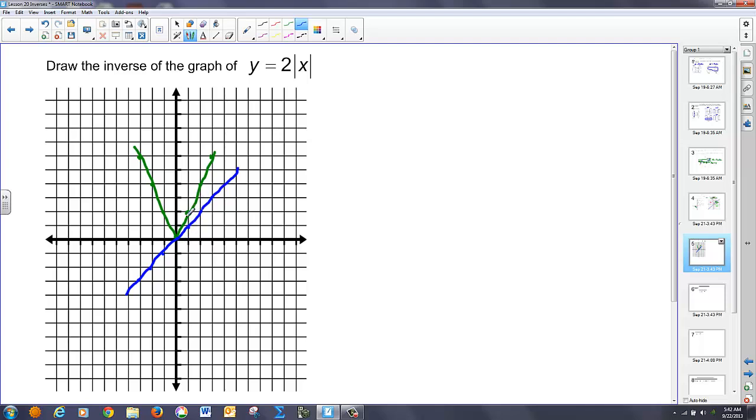I know this is the point one two, so the point two one should be on that curve. This is the point two four, so the point four two should be on that curve. Three six, six three. Let's go to the other side now, negative one two, so two negative one, negative two four, so four negative two, and negative three six, six negative three. I'm going to draw that.